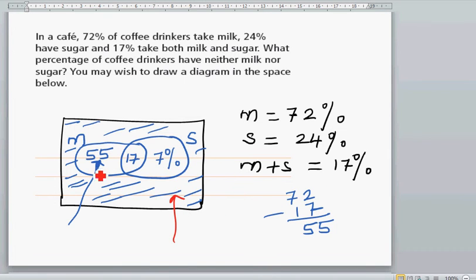Let's add these three numbers. We got 55 for the people who only take milk, 17% take milk and sugar, and there are 7% who take only sugar, not milk. If you add them, 7 plus 7 is 14, plus 5 is 19, remainder 1.